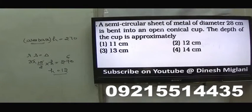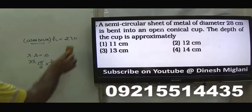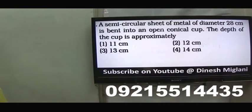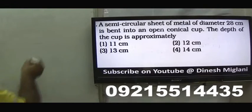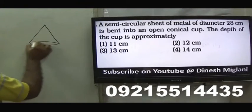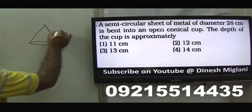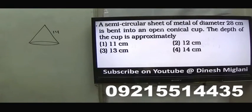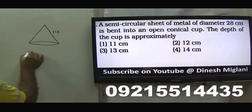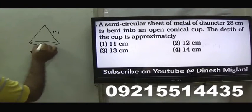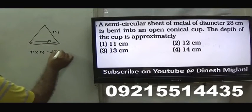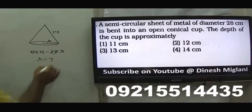Fourth question: a semicircular sheet of metal of diameter 28 cm is bent into an open conical cup. Find the depth. When bent into a cone, the radius of the semicircle (14) becomes the slant height L=14. The circumference of the semicircle is π×14, which becomes the base circumference 2πr, giving r=7.